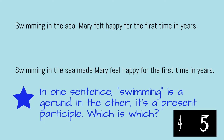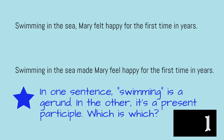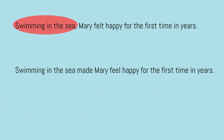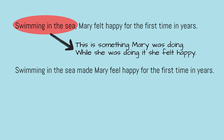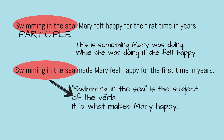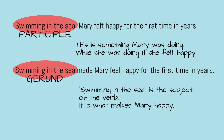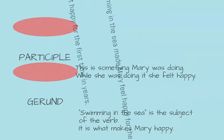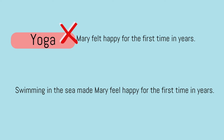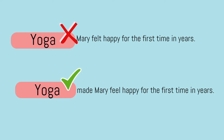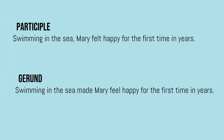Can you work out which is which? In the first sentence, "swimming in the sea" is something Mary was doing, and at the same time as doing it, she felt happy — swimming is a participle. In the second sentence, "swimming in the sea" is the subject of the verb; it's what makes Mary happy, so swimming is a gerund. Try replacing "swimming in the sea" with a noun — for example, "yoga." Yoga works as a replacement in the second sentence but not in the first, so we know swimming is a gerund in the second sentence and a participle in the first.